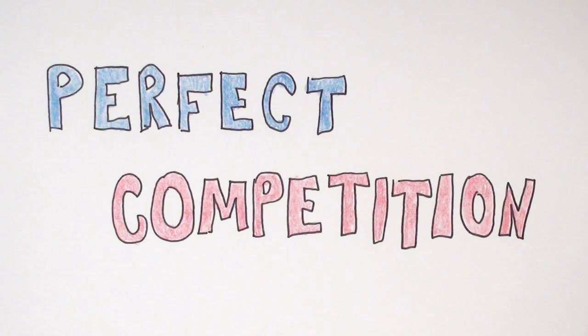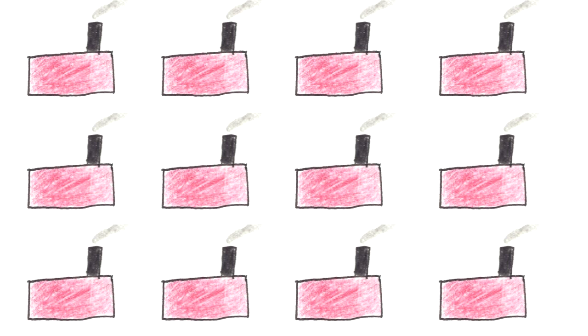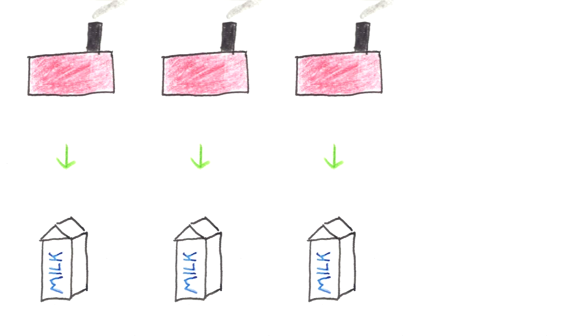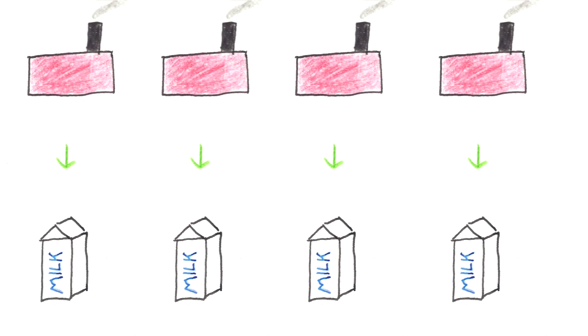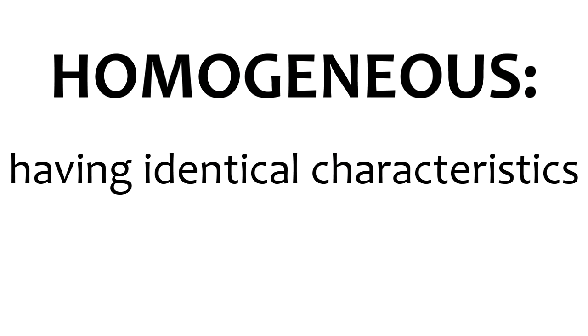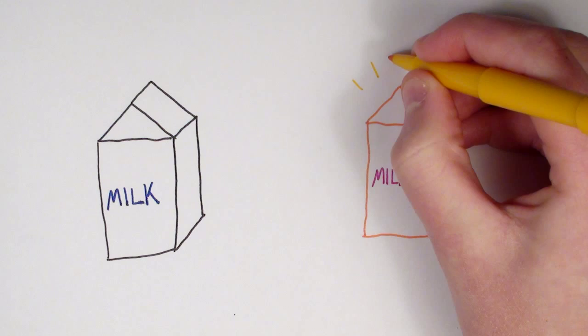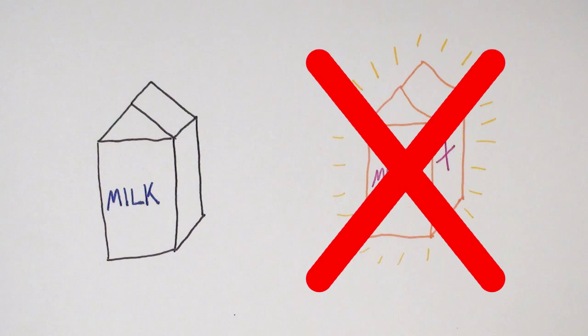For an industry to be considered perfectly competitive, there are four requirements. First, there need to be many firms. Now, there's no exact number, but there need to be enough that no one has control over the industry. If one firm were to shut down, it wouldn't be noticeable. Second, each of these firms needs to be producing the same thing, as in identical or homogeneous products. If one firm's product was somehow better than their competitors, then that firm would have an imperfect advantage.